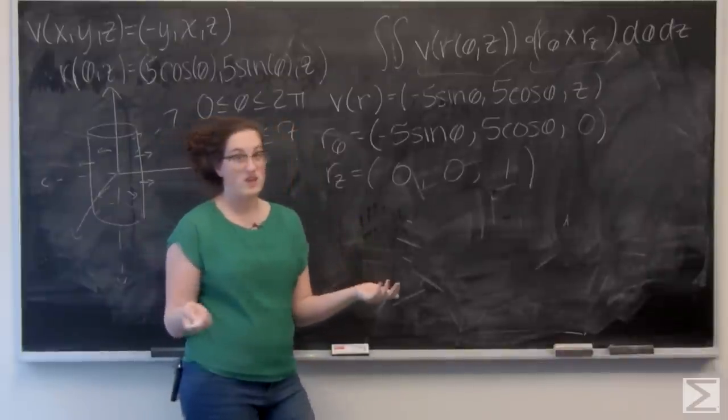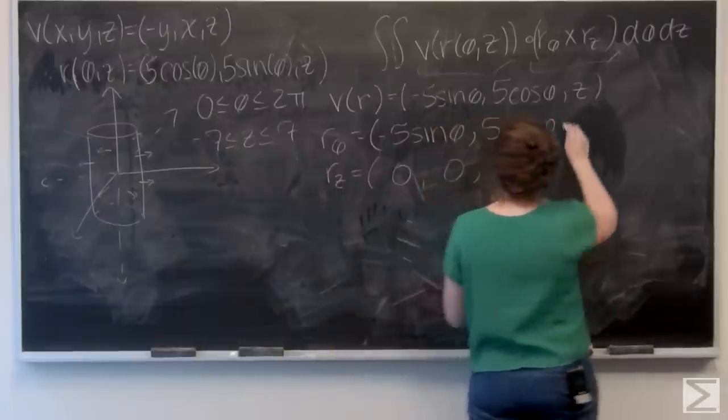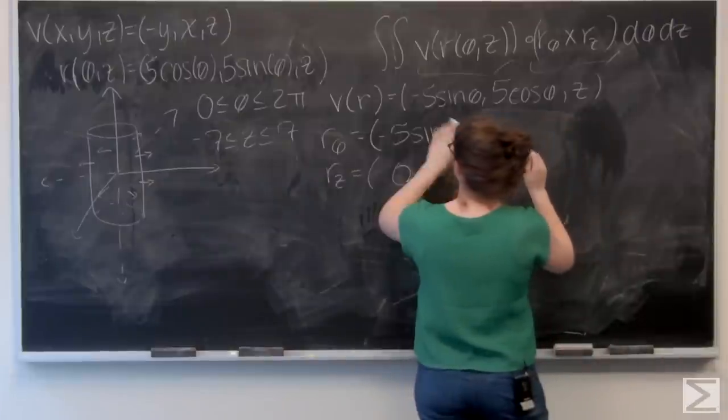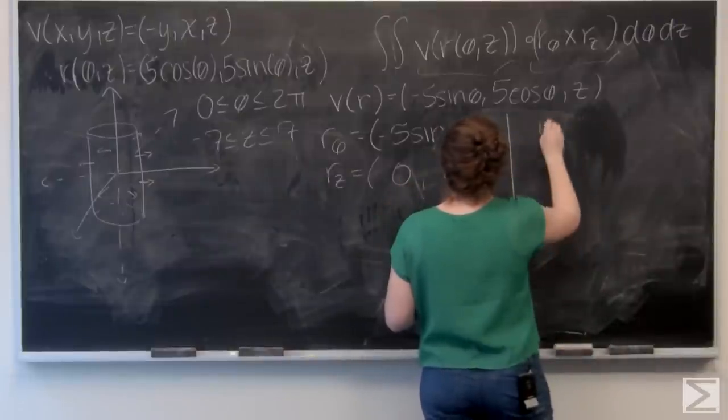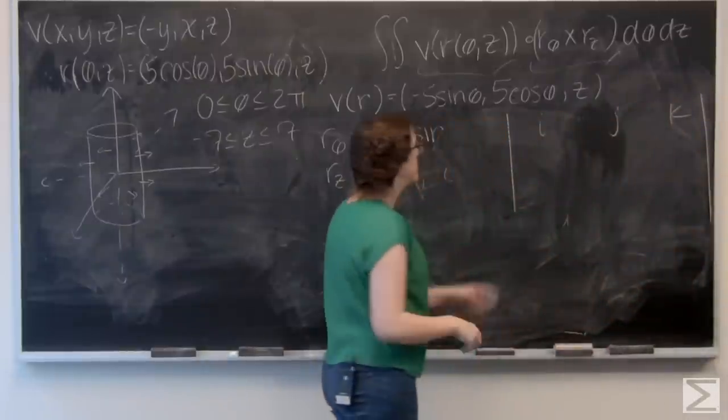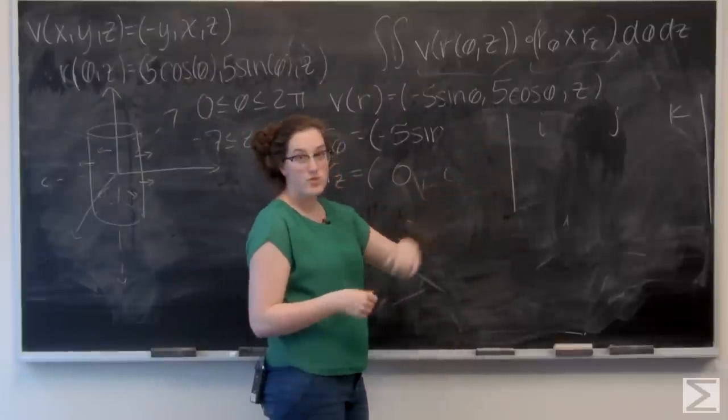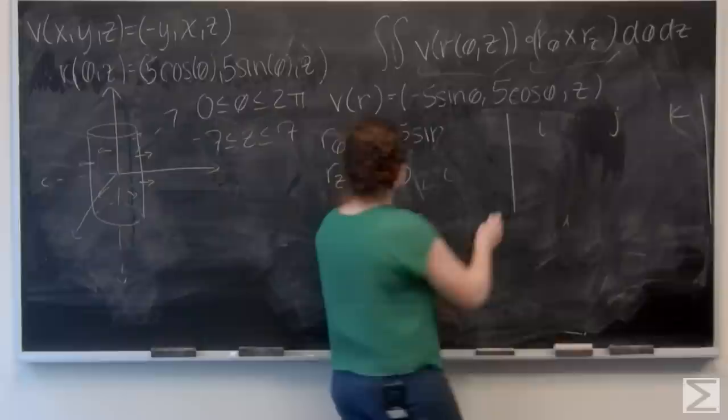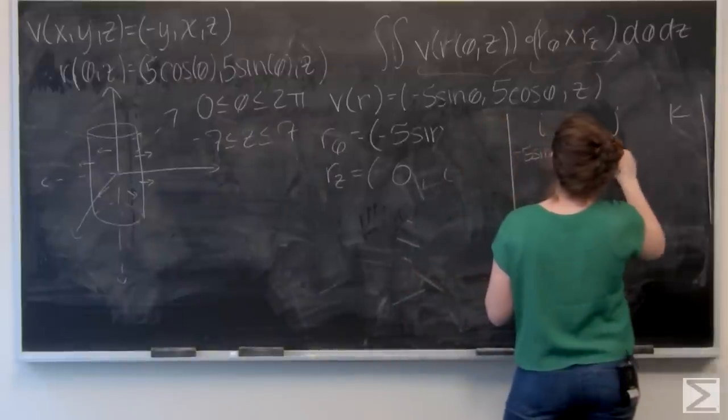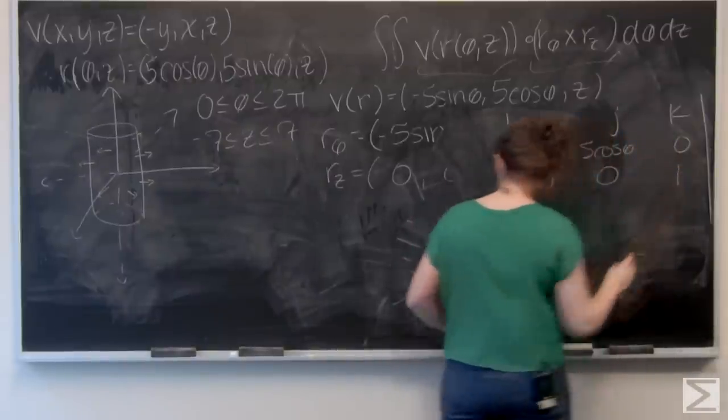I'm going to use the matrix and cofactors expansion. So I have a 3 by 3 matrix. The first row is the vector components i, j, and k. The second row is r theta and the third row is r z. So I'm just going to copy those over.